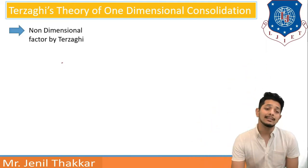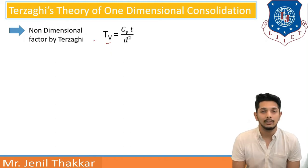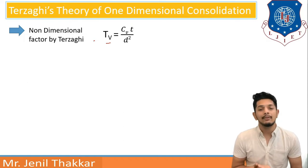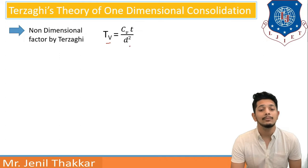Terzaghi has given a non-dimensional factor which is Tv that is called as time factor. He has related coefficient of consolidation with time factor like this: Tv is equal to Cv into T by D square.